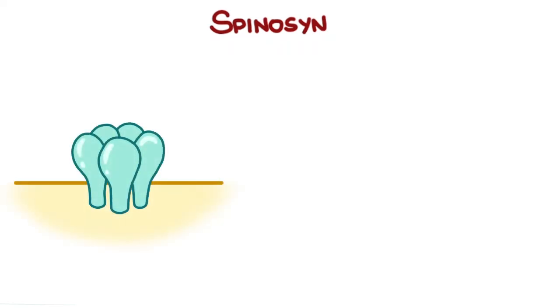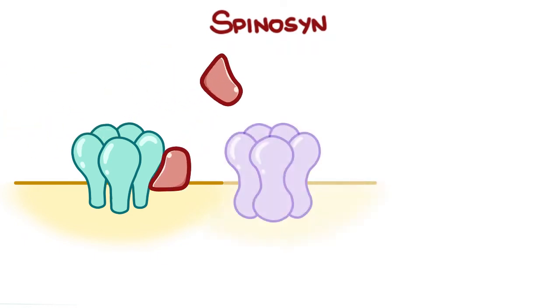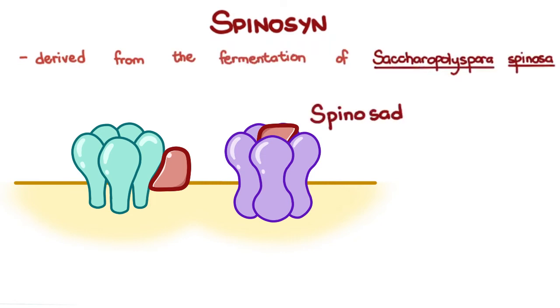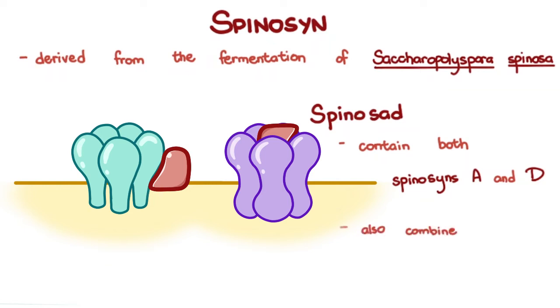Spinosyns are a class of insecticide similar to neonicotinoids in that they also target nicotinic acetylcholine receptors, but at a different binding site. They also affect GABA receptors. They are derived from the fermentation of Saccharopolyspora spinosa. Spinosad contains both spinosyns A and D. It has been formulated in chewable tablets for both dogs and cats, and can also be combined with milbemycin oxime for monthly heartworm prevention and internal parasite control.